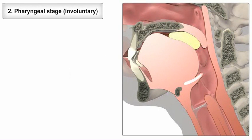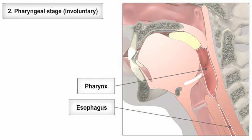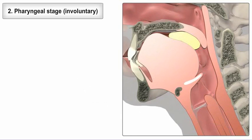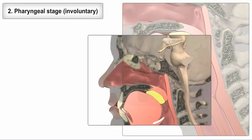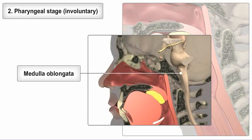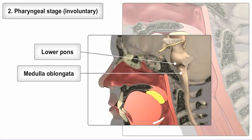Next is the pharyngeal stage, in which involuntary movements push the bolus through the pharynx and into the esophagus. Movement of the bolus stimulates receptors in the oropharynx, which send impulses to the deglutition center in the medulla oblongata and the lower pons of the brainstem.